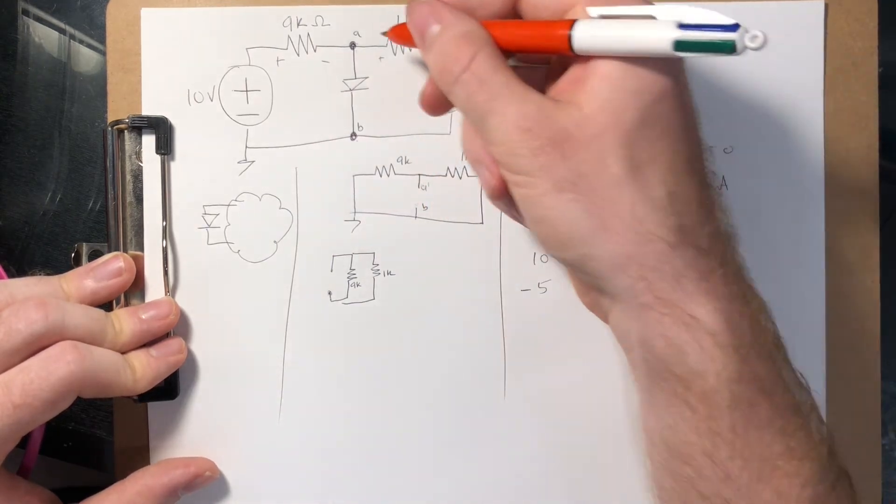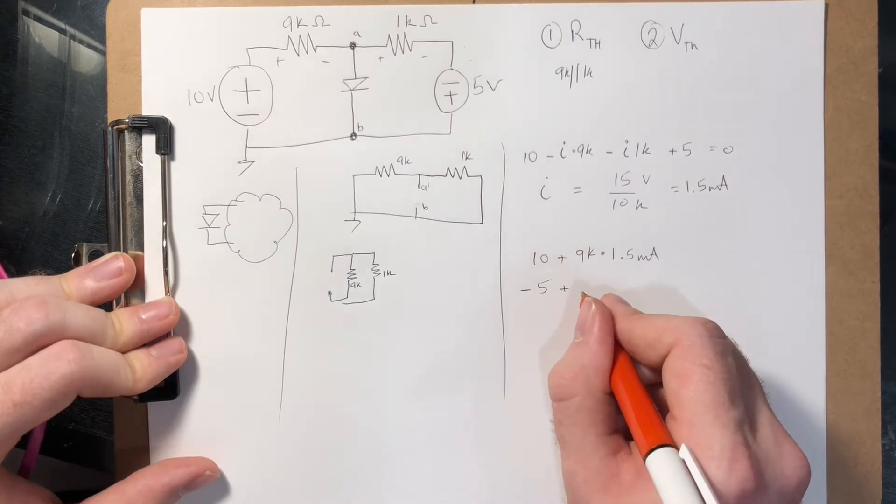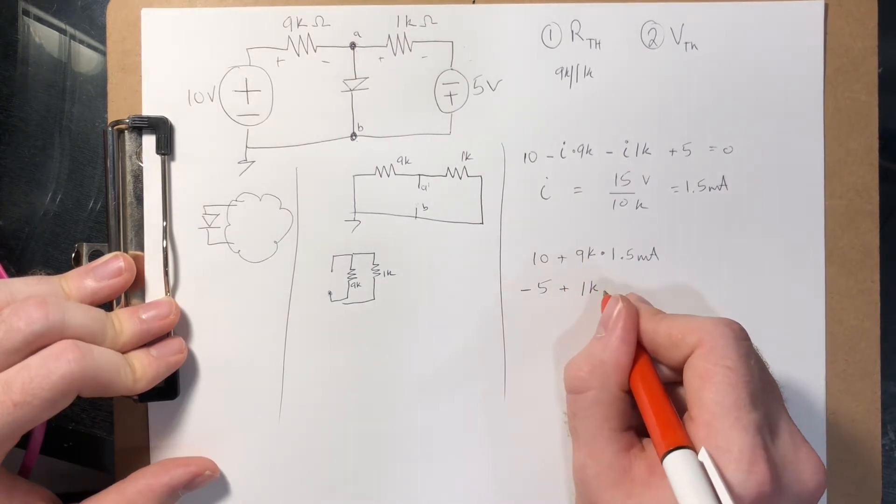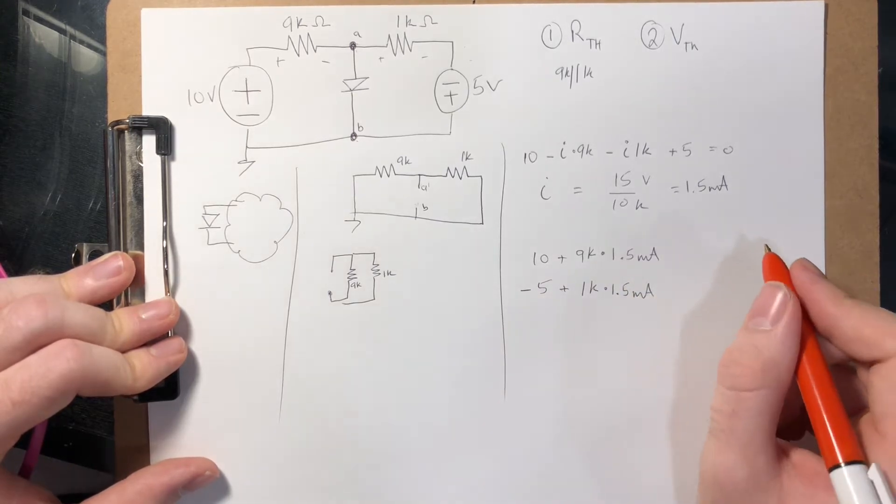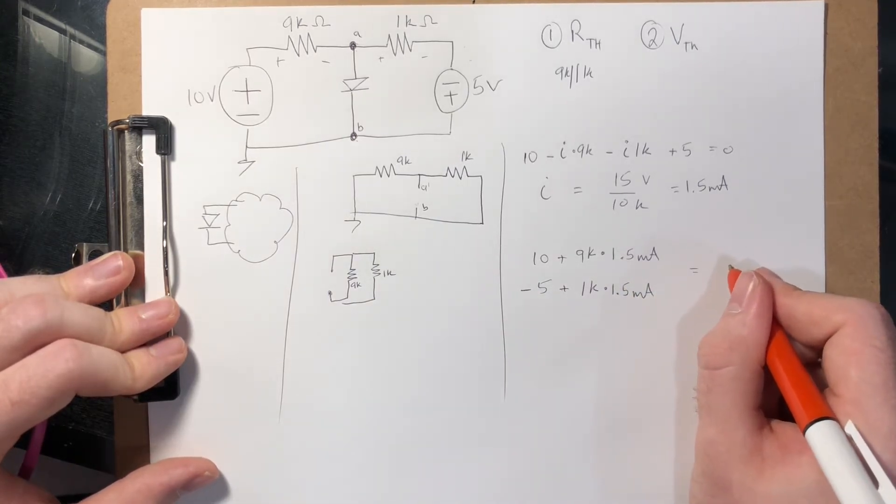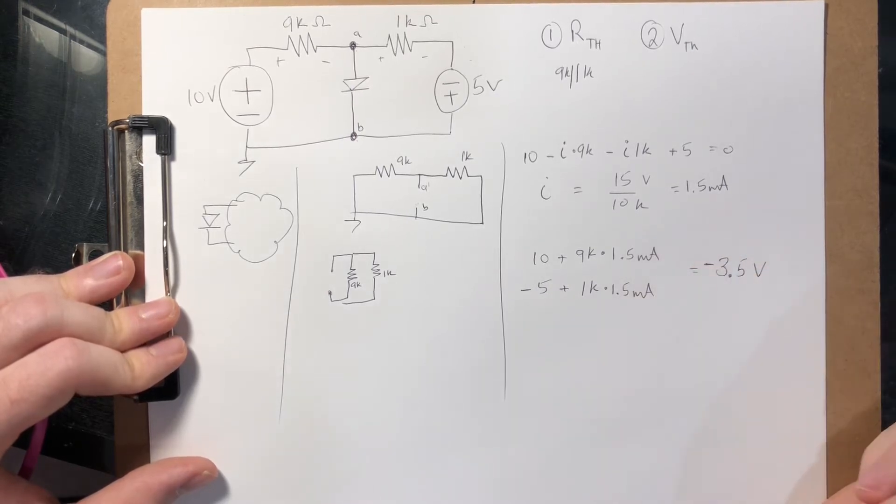And then again, we're adding because we defined our voltage drop this way, plus 1k times 1.5 milliamps. And those both will give us the same value, minus 3.5 volts.